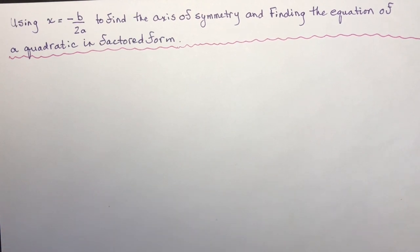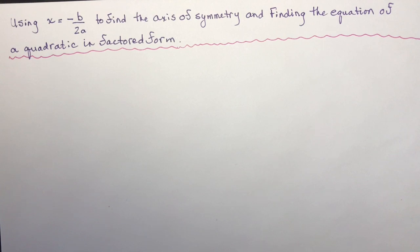This lesson is going to show you a couple of magic things. First, how to use x equals negative b over 2a to find the axis of symmetry, and hence the equation in vertex form if you want, and how to find the equation of a quadratic in factored form.